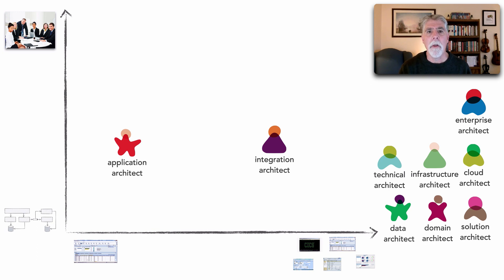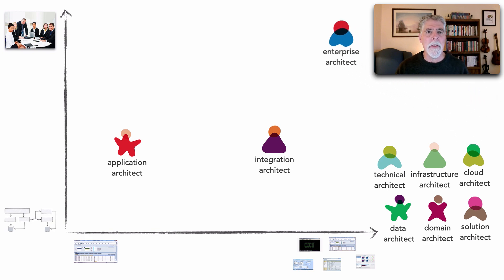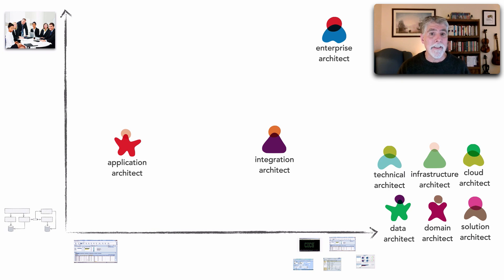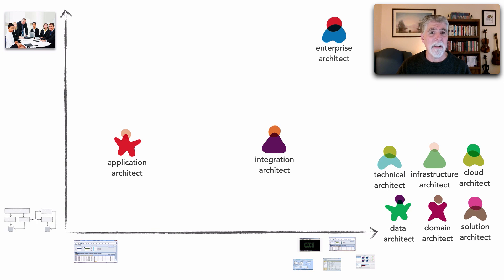The third traditional role was that of the enterprise architect. The enterprise architect sits in this corner here — notice a heavy focus on business and also multi-system. An enterprise architect really works with the business: once a business initiative is identified, the enterprise architect generates roadmaps and identifies what changes are needed across the enterprise to address or solve that initiative.